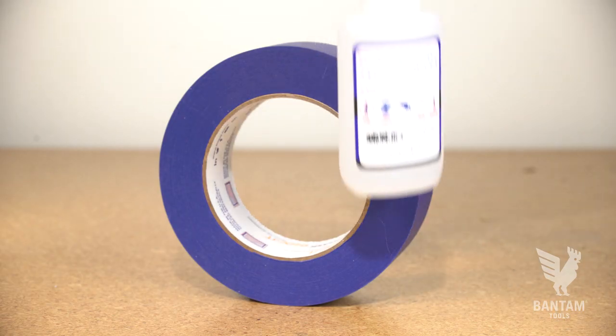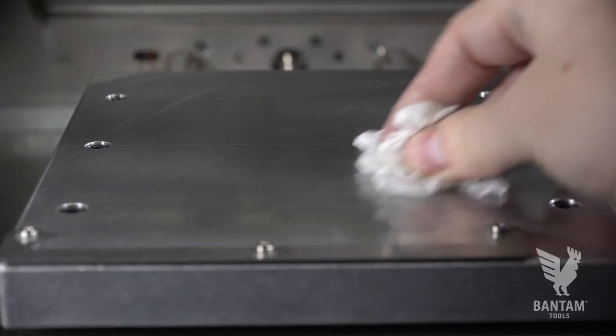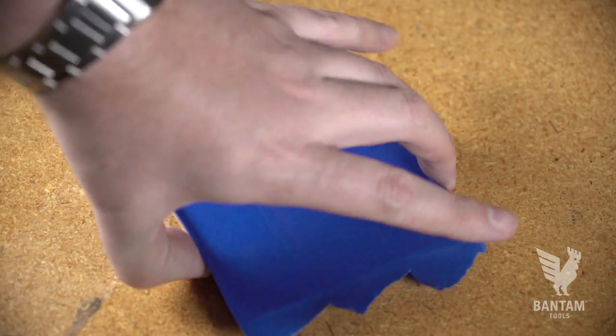To maximize rigidity and get a smoother surface finish, use super glue and tape. Clean the stock and spoilboard, then cover both with tape. Do not leave any gaps.